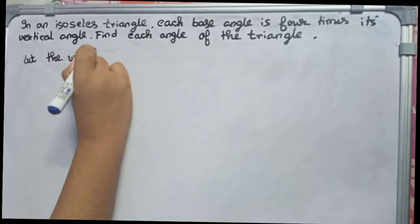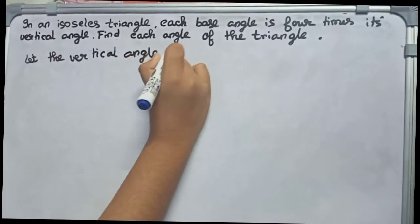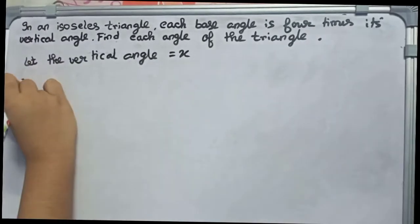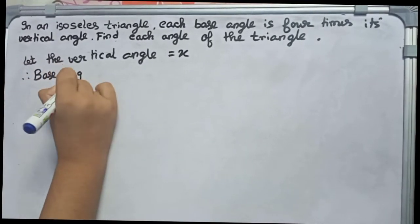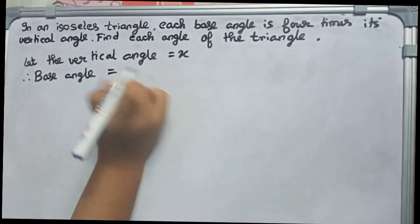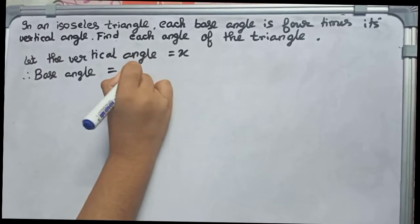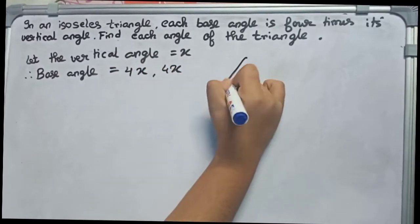equal to x. Now, therefore, the base angle - because it is given it is four times its vertical angle - therefore it will become 4x, 4x, because there are two base angles.